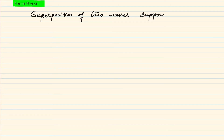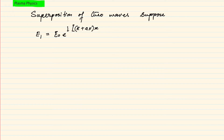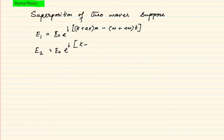Suppose we consider the superposition of two waves. One wave is E1 = E0 e to the power i[(k plus delta k)x minus (omega plus delta omega)t], and another wave is E2 = E0 e to the power i[(k minus delta k)x minus (omega minus delta omega)t]. These are the two waves we have taken.